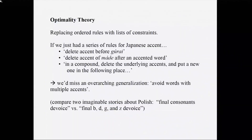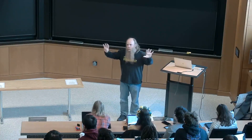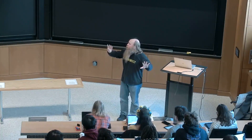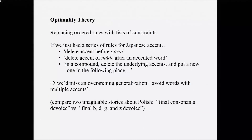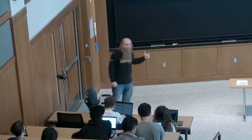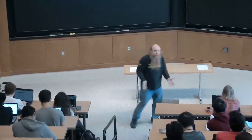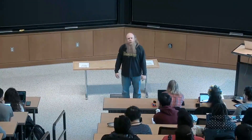We've talked a couple of times about Polish: consonants like b, d, g, and z devoice at the ends of words. That allows us to capture facts about plurals — sounds that are voiceless word-finally become voiced again when suffixes are added, because they're underlyingly voiced. There are two ways to state this: one rule — 'final consonants devoice' — or four separate rules, one for each sound. The general rule is clearly better.